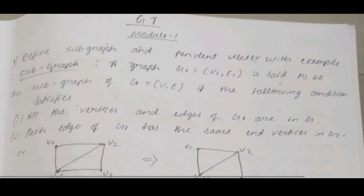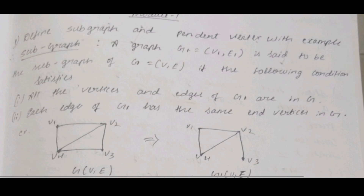Hello guys, welcome back to our YouTube channel. Today we'll discuss our Graph Theory Module 1 important questions. Define subgraph and pendant vertex with example. We'll see about subgraph. A graph G1 = (V1, E1) is